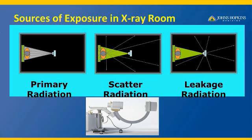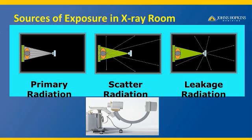In any x-ray room, there are three primary sources of radiation. The first is called primary radiation, which arises from the source and is confined to the size of the image receptor. The second source is scattered radiation, which arises from the patient. When x-rays pass through the patient, the patient actually scatters radiation in all directions, and this is one of the sources which we need to protect ourselves from if we are inside an imaging room.